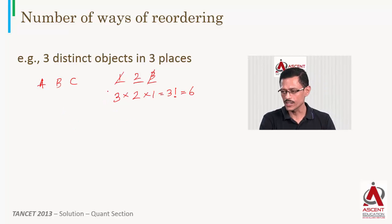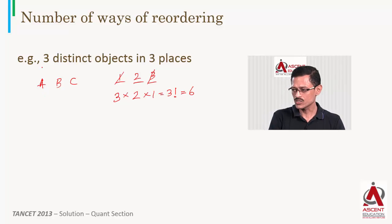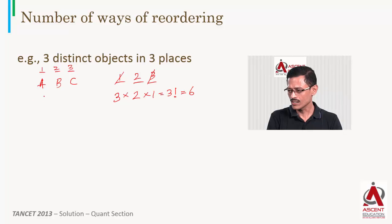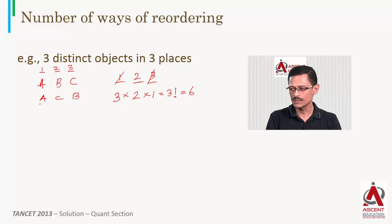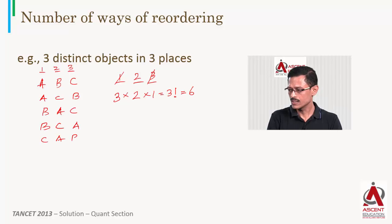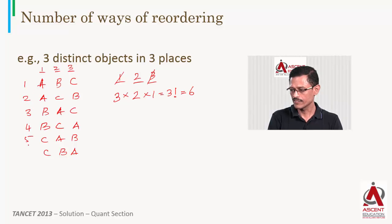For A, B, C in chairs 1, 2, 3, the six arrangements are: ABC, ACB, BAC, BCA, CAB, CBA. Those are the six ways — 1, 2, 3, 4, 5, 6.